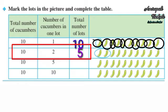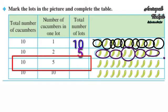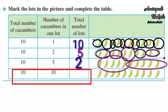Next, total cucumbers are 10 and number of cucumbers in one lot is 5, so there are 5 in one group, making 2 groups total. Next, total cucumbers are 10 and in one lot there are 10, so total number of lots will be 1.